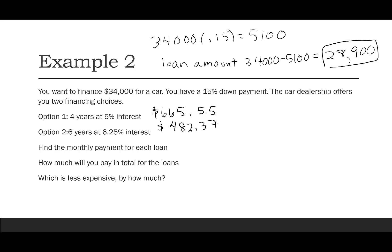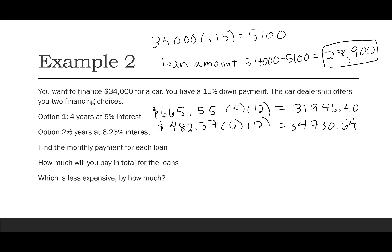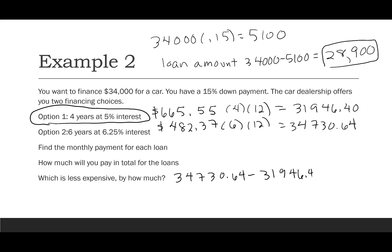Now let's compare total cost. Option one: $665.55 × 4 × 12 = $31,946.40. Option two: $482.37 × 6 × 12 = $34,730.64. Option one is less expensive. The difference is $34,730.64 minus $31,946.40, which is a savings of $2,784.24.